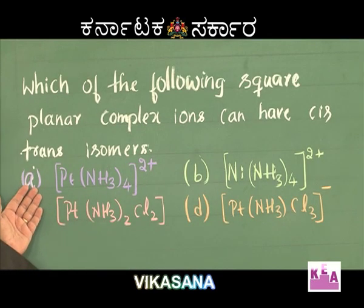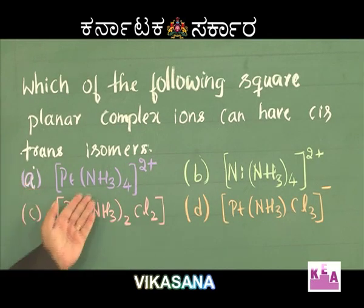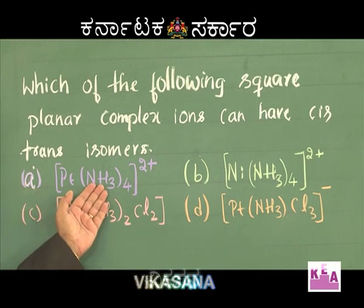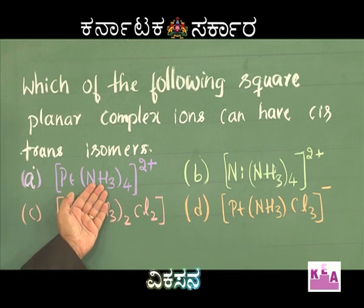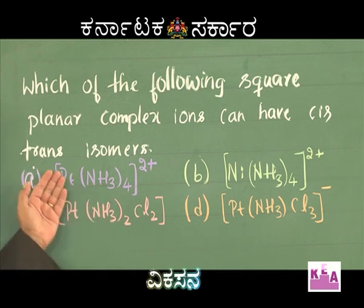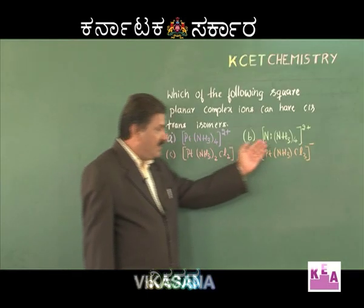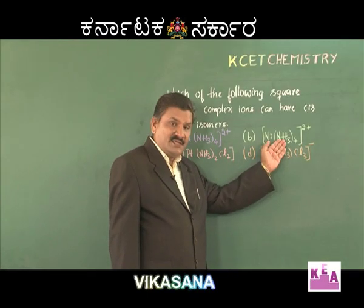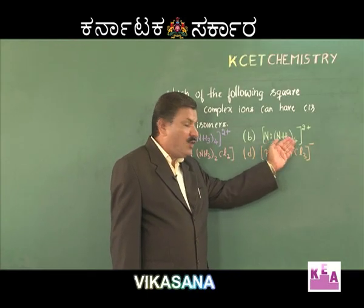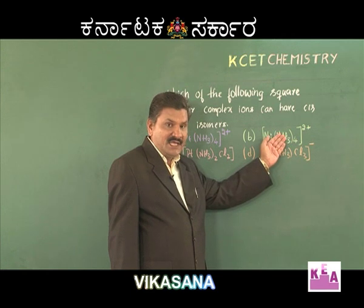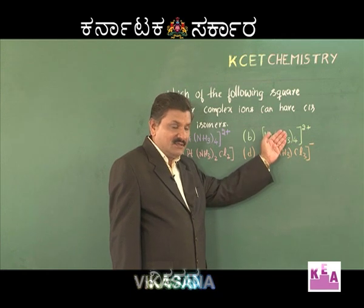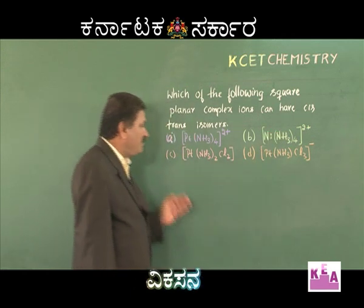Look at the complex ions given here. Option A is a homoleptic complex — it has four same ligands, so this is ruled out. Similarly, option B is also a homoleptic complex having four ammonia ligands, so this is also ruled out.